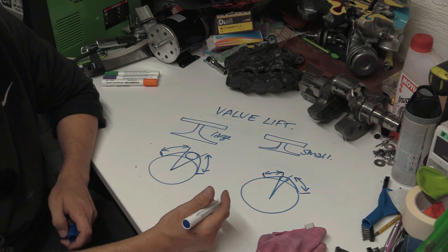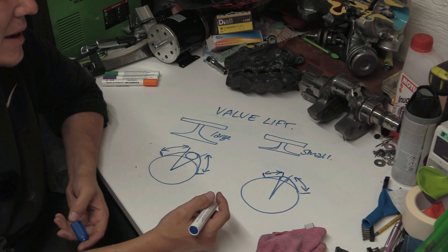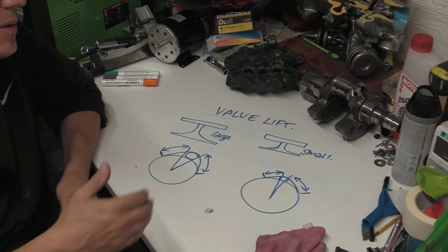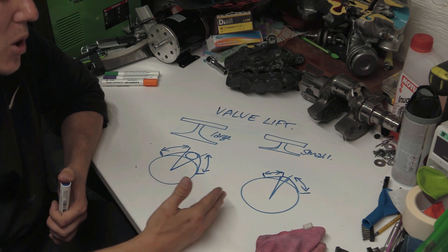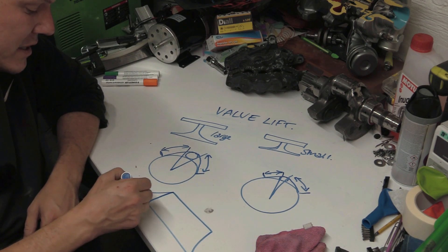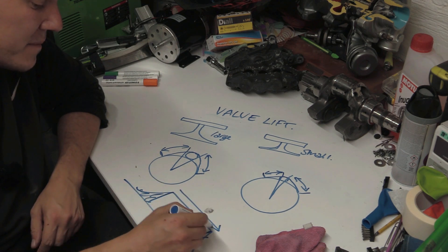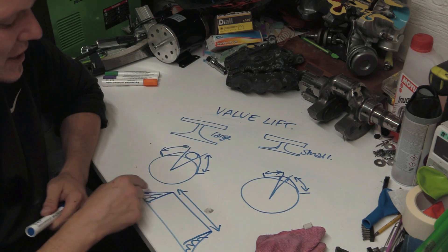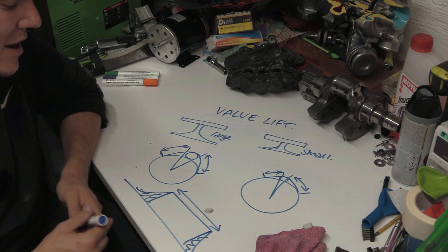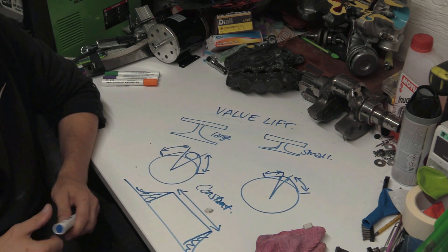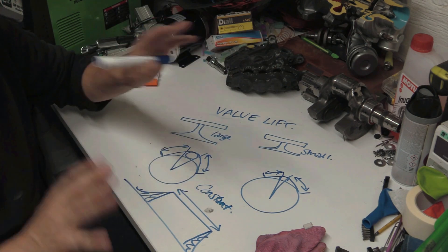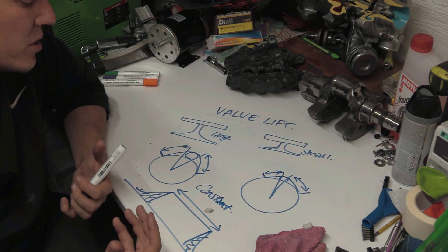Ideally you want larger valves with smaller lift, for several reasons. With less lift, you spend less time accelerating the cam profile back and forth. If you can stay at a given opening - basically it just opens, stays there, then closes - those opening and closing sections are dynamic, changing millisecond to millisecond, whereas the constant open section is stable. We love a constant because it's much easier to accommodate - you know exactly what's going to happen.